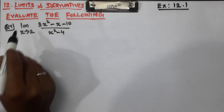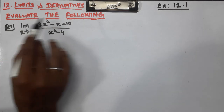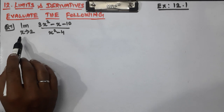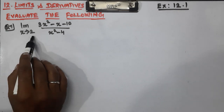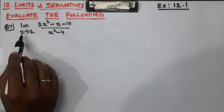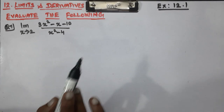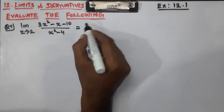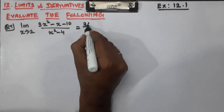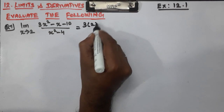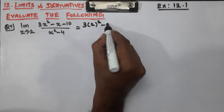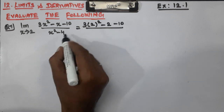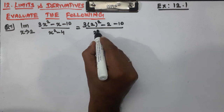Evaluate Question number 7. This limit extends to 2. Apply x=2: 3 into 2 squared minus 2 minus 10, divided by 2 squared minus 4.